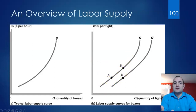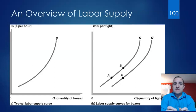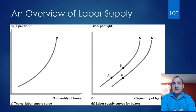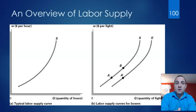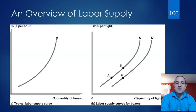In team sports, the quantity of labor provided is typically for a given season, so the price variable is the amount paid per season, or the salary. For sports like baseball or football, the quantity would be the number of years the player is willing to play.